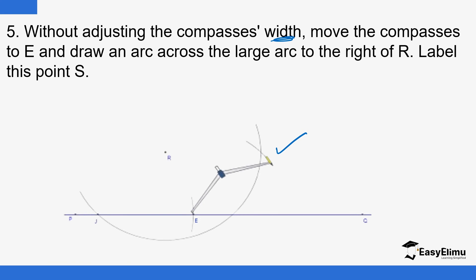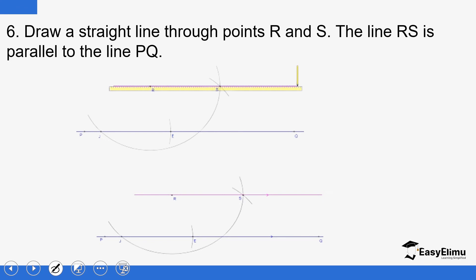Use E as the center and draw that arc. You can call the intersection point any letter you wish — maybe S or X. Then use a ruler to join R to that point of intersection. That line will be the line you are looking for. So the line RS is the line that is parallel to line PQ and passing through R. That is the procedure.